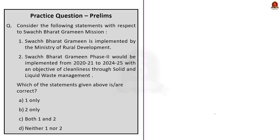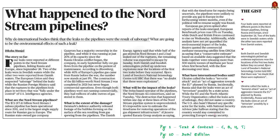In this discussion, we saw about Swachh Bharat Mission and Swachh Survekshan Gramin. The next article reports about recent multiple leakages in the Nord Stream Pipeline. While the European Union called it an act of sabotage, Russia called it an act of terrorism. In this context, let us learn about the Nord Stream Pipeline and the economic significance of it.